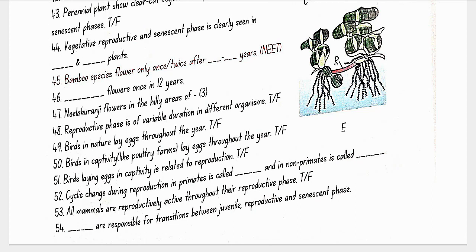Bamboo species flower only once after 50 to 100 years. Strobilanthus kunthiana (neelakurangi) flowers once in 12 years in hilly areas of Kerala, Karnataka and Tamil Nadu. Reproductive phases are of variable duration in different organisms. Birds in nature do not lay eggs throughout the year — false; birds in captivity like poultry farms lay eggs throughout the year — true.